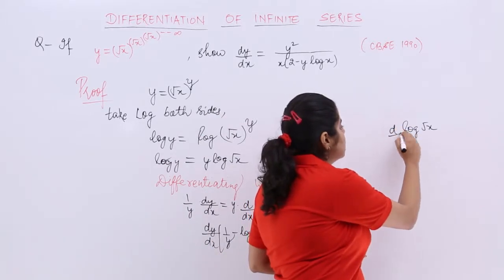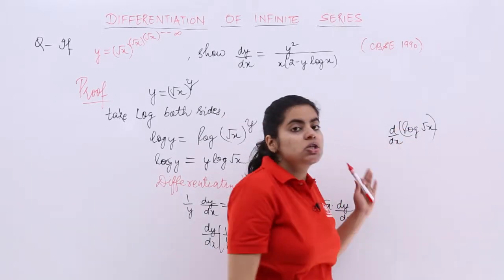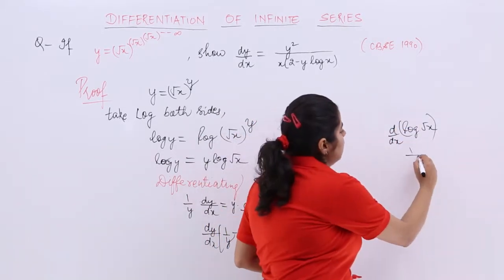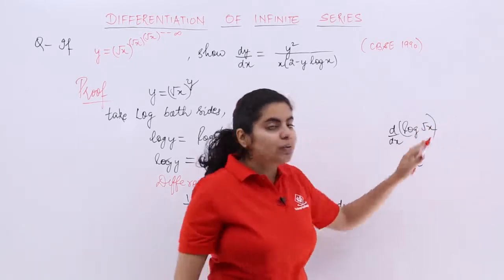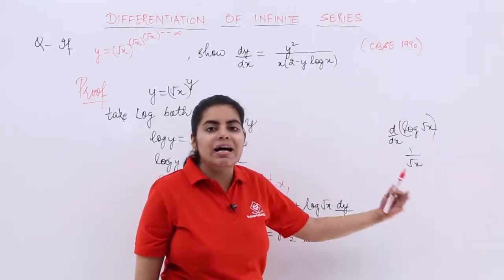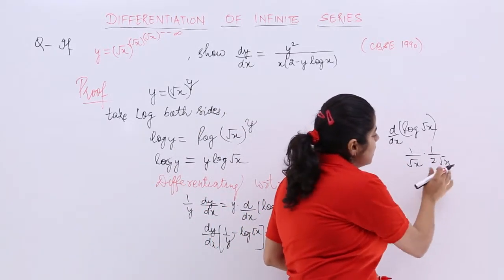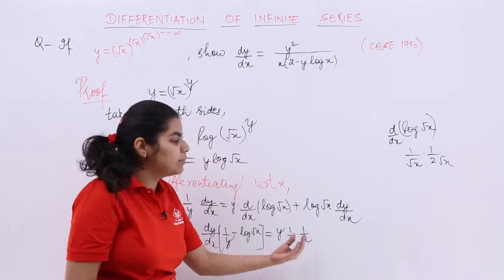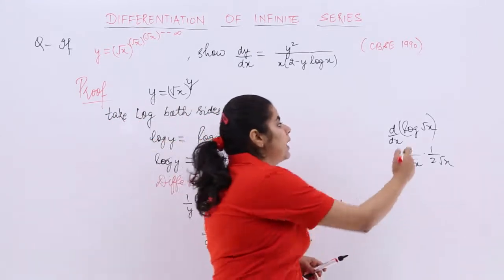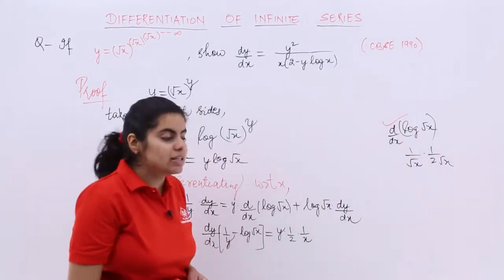you can automatically differentiate from here. So log root x differentiation is 1 by root x. And root x is what? It also has by chain rule again a differentiation. So it is 1 by 2 root x. Root x into root x becomes x. The same thing we have done here. So if you apply chain rule, then also you get the same answer. If you do it like this, you apply the power formula, then also you get the same answer.